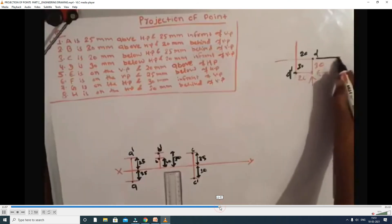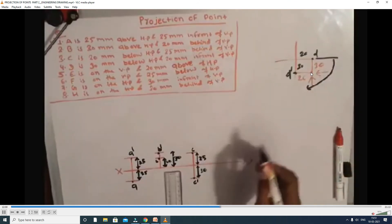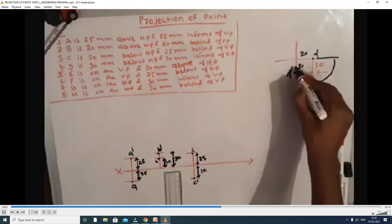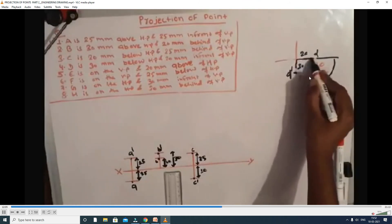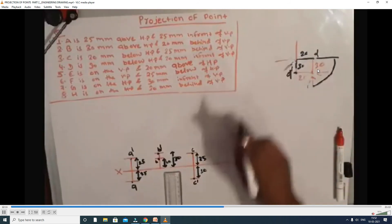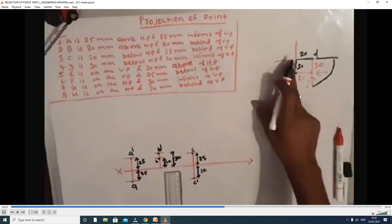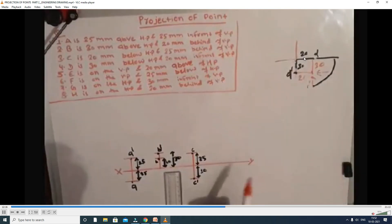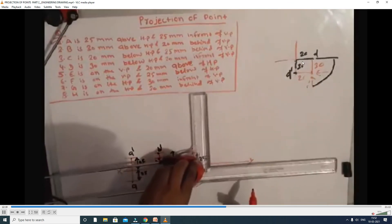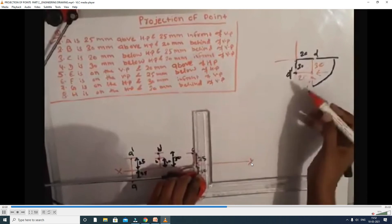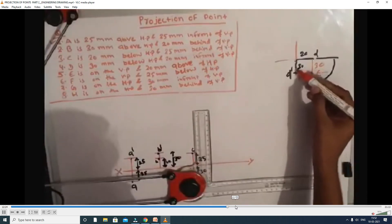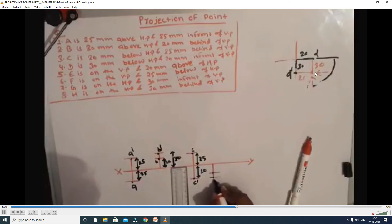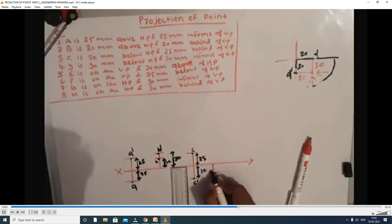Fourth coordinate, point D: in front of VP 25 mm, below HP 30 mm. Front view projects on VP. Top view projects on HP — it rotates 90 degrees. Both front view and top view come below the reference line. The four coordinate positions are complete.